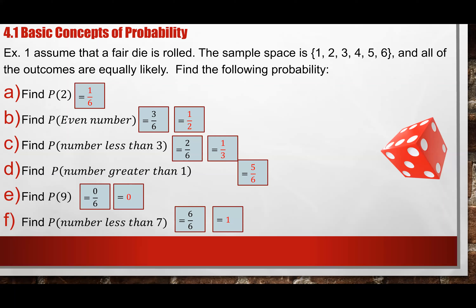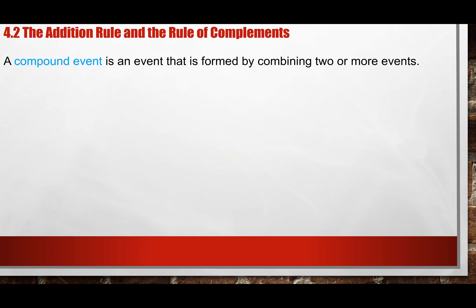To find a probability, the most important thing you need is to know the total item — the sample space. You have to know what the total data or total items are. Without a total, we cannot find a probability. Then from the total, ask what are we looking for — those are the two key things to find probability.